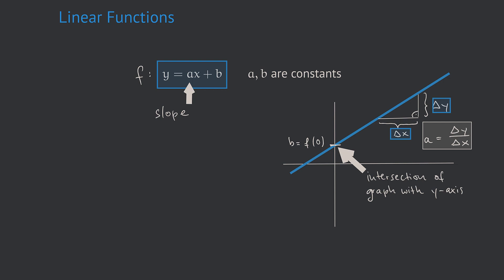So b can be thought of as the position where the graph intersects with the y-axis. For that reason, b is often called the y-intercept.